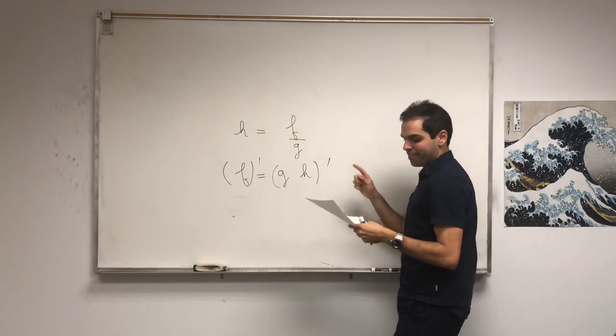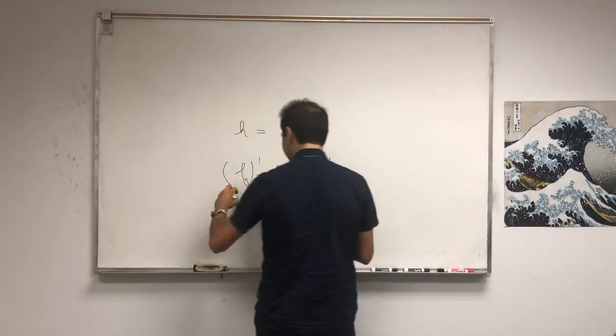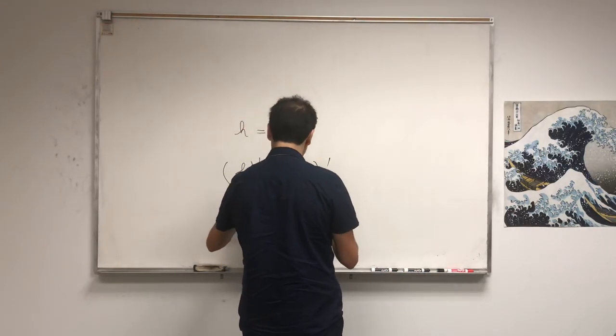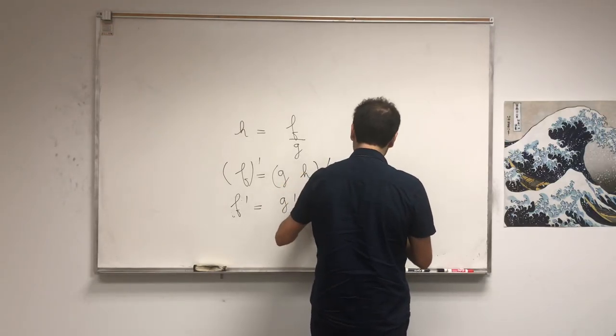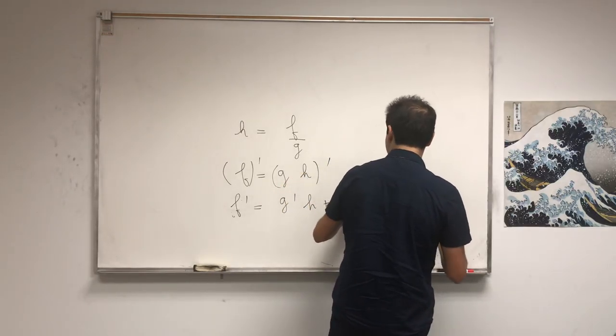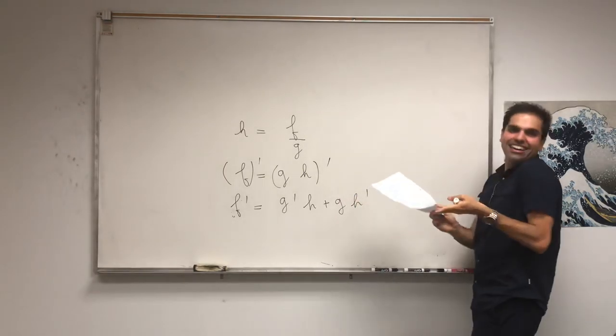Ezi, to ef prime, issutaime g prime times h plus g times h prime. Ta-da! Google translate.